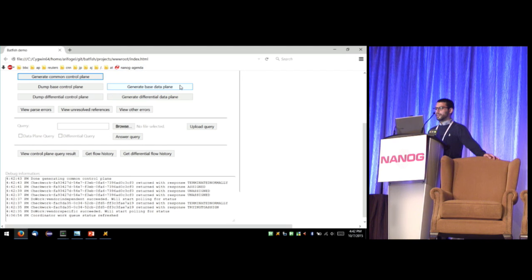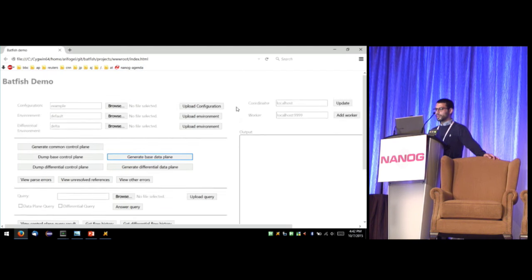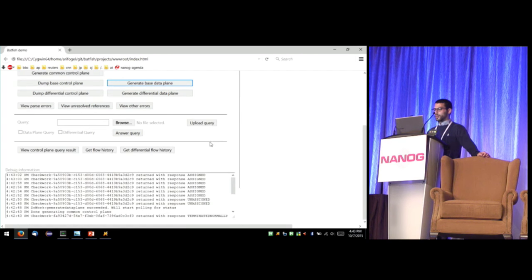So basically what we've done is we've zipped up the configuration files that I've written for this network and uploaded them, and now what we're going to do is process them. You can't see here, but down here it's parsing and converting that to our unified format that we use to represent configurations. That's done, and now we're going to generate the forwarding tables for that network.